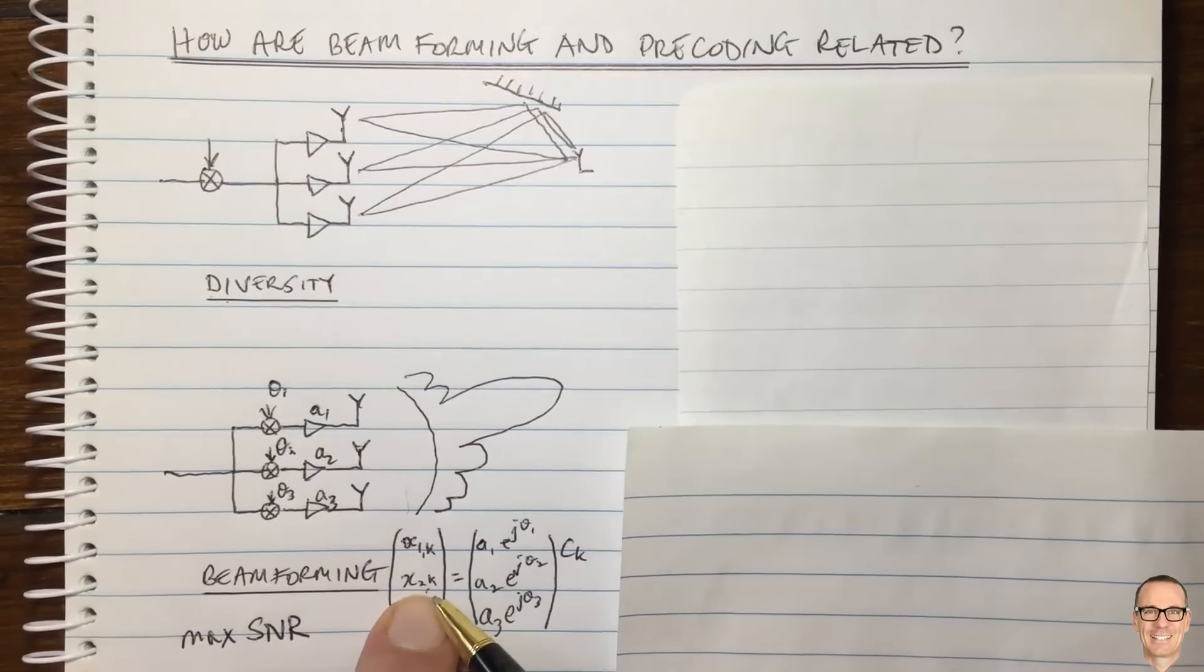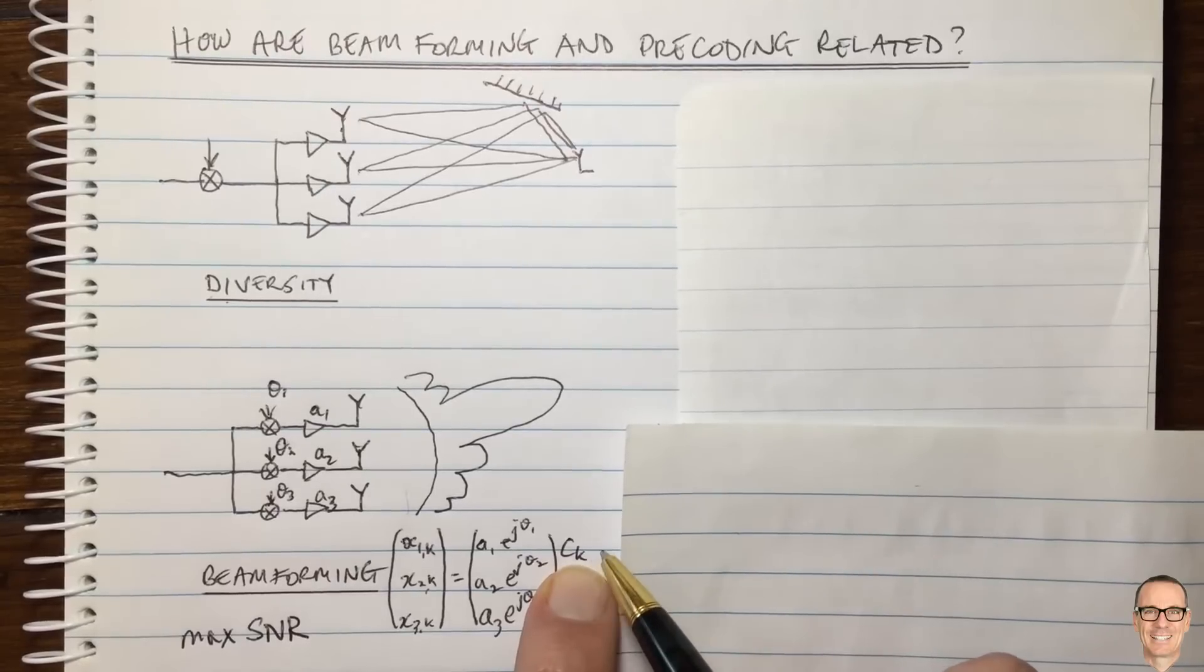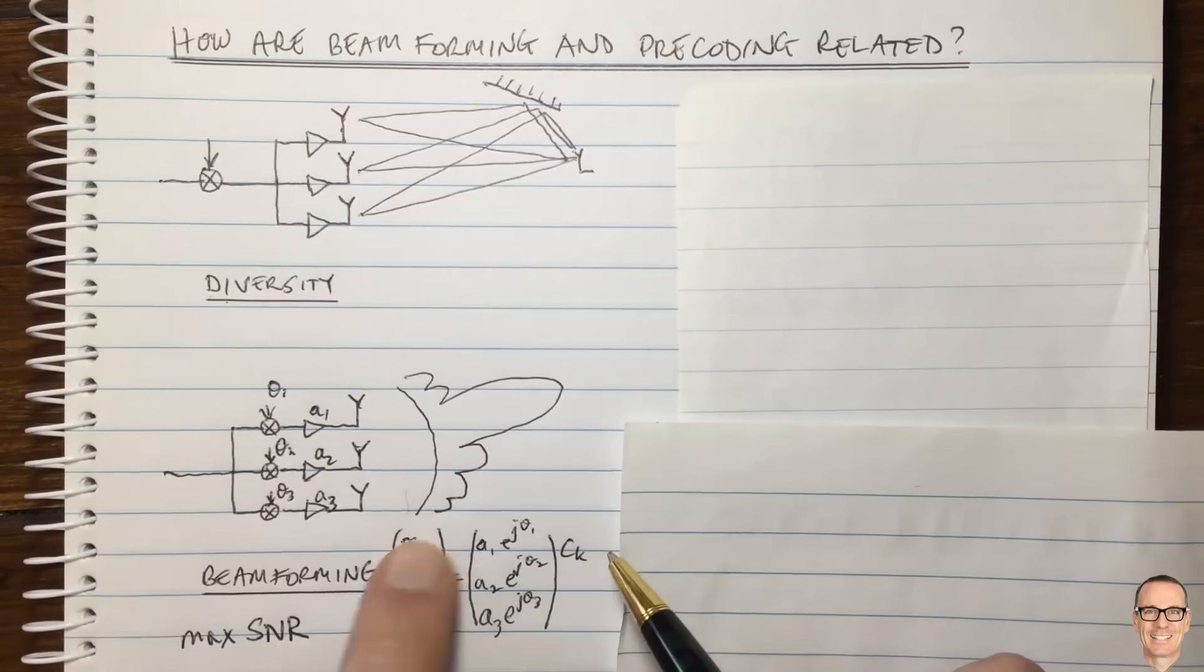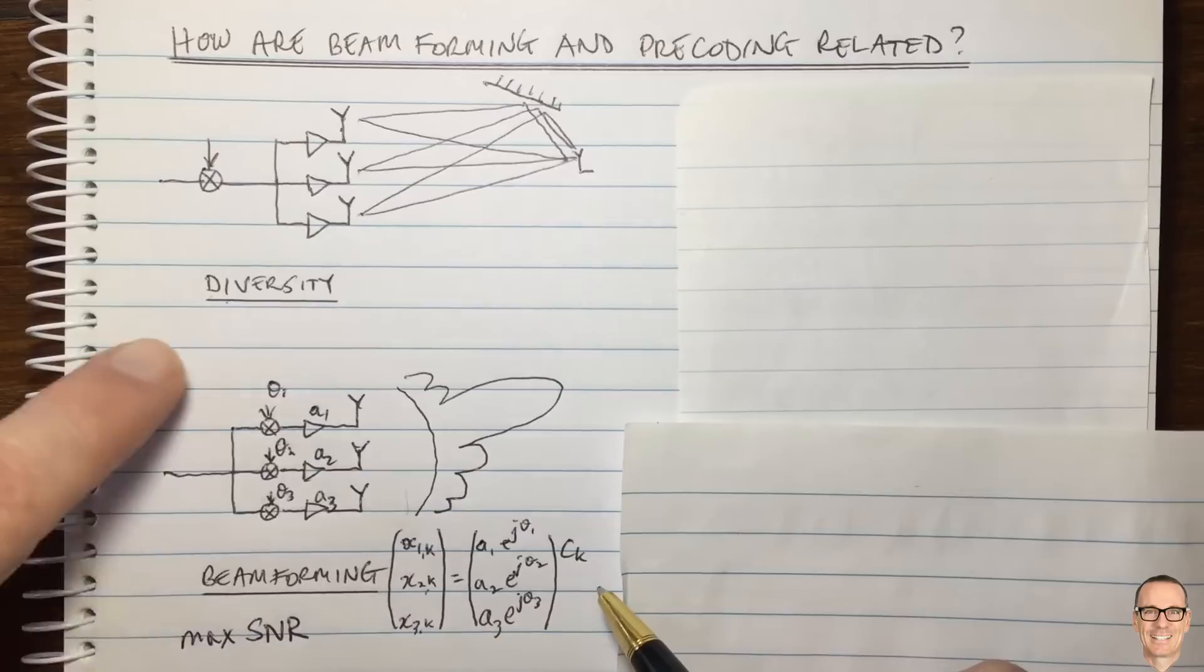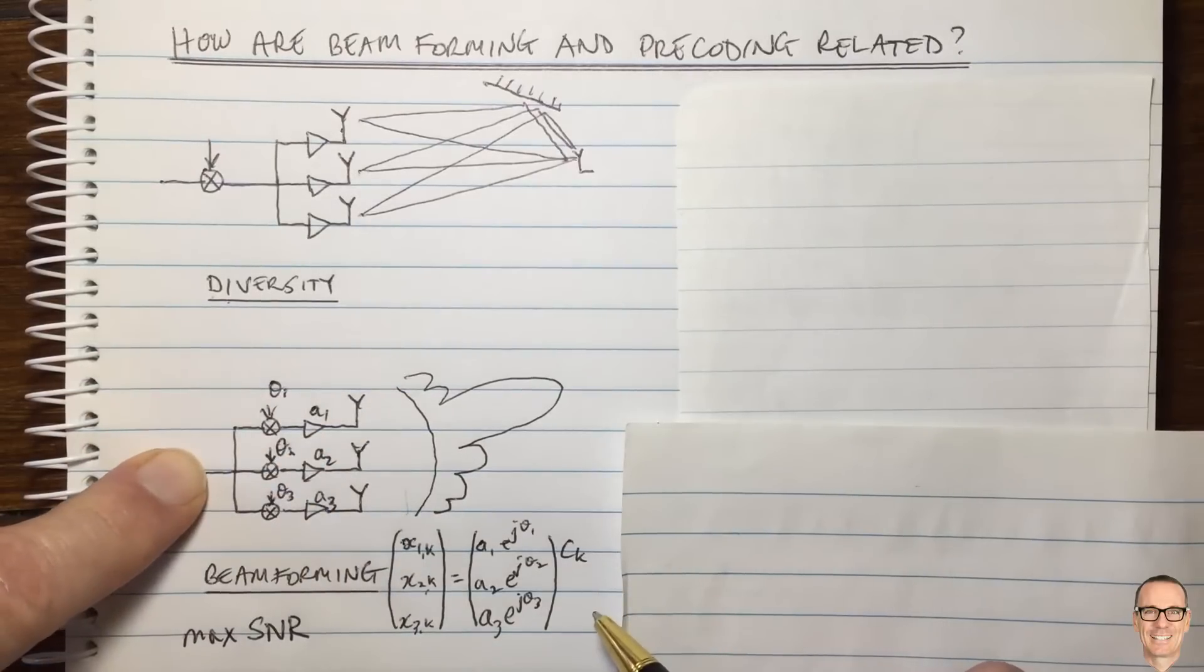And going off X2 at time K, off the second antenna, is the same constellation point because it's the same signal we're sending, but it's now got a different amplitude and a different phase, and so on. So here's a matrix expression for what's going on if you implement here with analog beamforming.